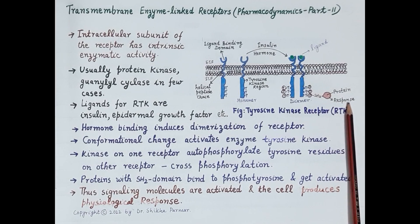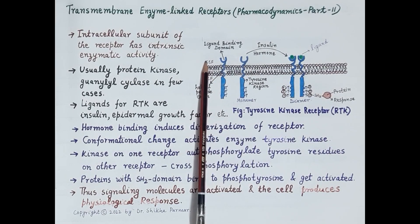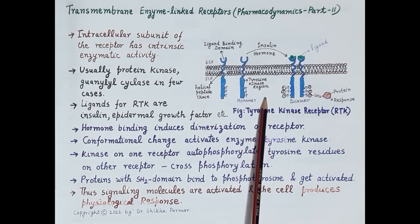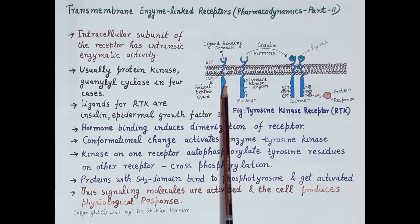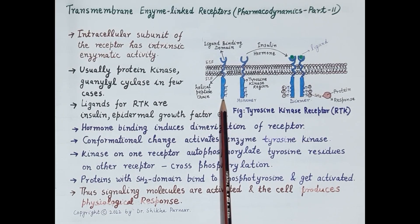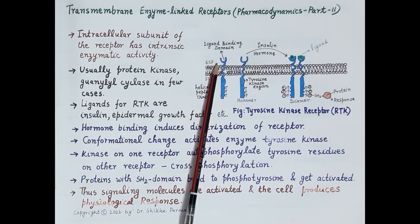Now look at this figure. This is a cell membrane. Outside the cell membrane is present the extracellular fluid, whereas inside the cell membrane is present the intracellular fluid, that is the cytoplasm. This is the structure of a transmembrane enzyme-linked receptor. Transmembrane means across the cell membrane, so as shown in this figure, the receptor is transmembrane.